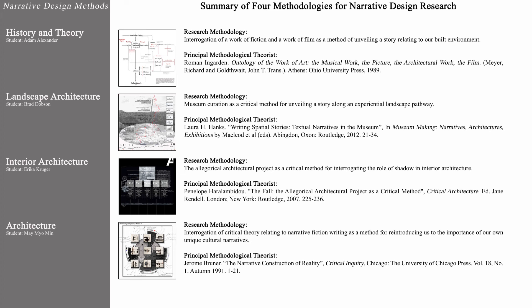Each of these four methodologies interrogated narrative design from the point of view of one or more principal narrative theorists. The first theorist, Roman Ingarden, discussed the narrative requirements for architecture to be understood as a work of art. The second theorist, Laura Hanks, unveiled how curated objects can be understood as a compelling narrative sequence, enabling the ordinary to be understood as extraordinary. The third theorist, Penelope Herlambidou, argued for the importance of allegorical narrative as a critical method. And the fourth theorist, Jerome Bruner, proposed essential conditions for the construction of reality in narrative fiction. Each student developed matrices derived from the theorist's narrative principles and devices. The discoveries arising from each successive matrix were then used to drill down further, which resulted in additional matrices. Each matrix in the sequence was used to develop sets of iterative design experiments, and the final design outcome was the result of the combined experiments.